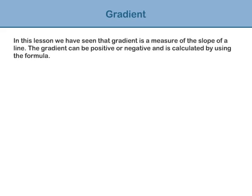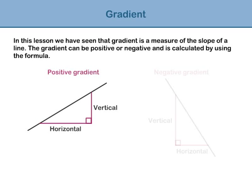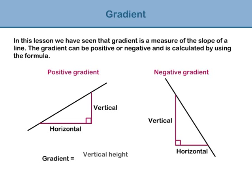In this lesson, we have seen that gradient is a measure of the slope of a line. The gradient can be positive or negative and is calculated by using the formula: gradient equals vertical height divided by horizontal distance, or M equals V divided by H.